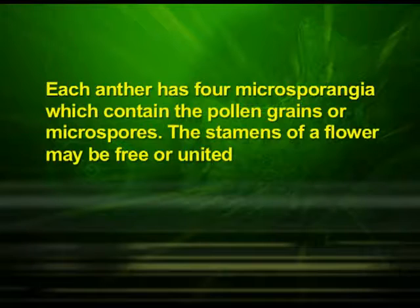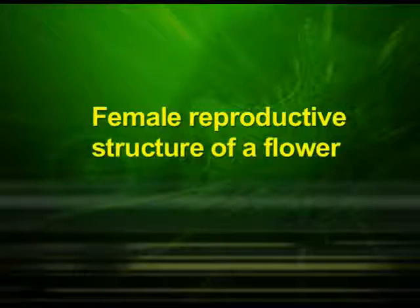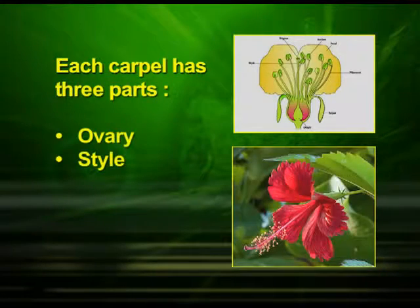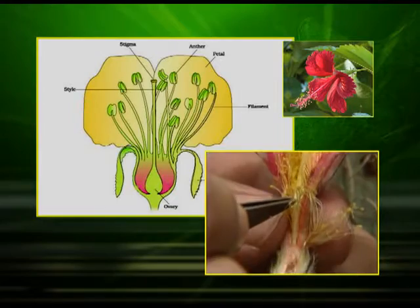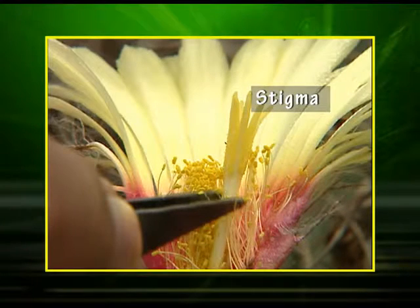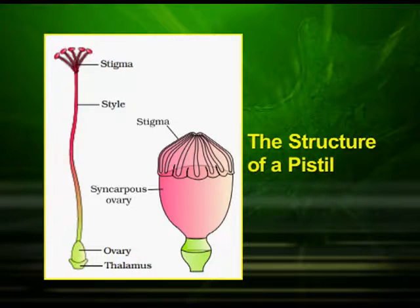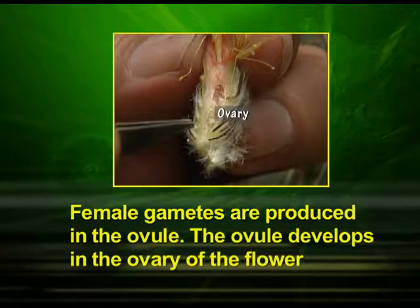Each anther has 4 microsporangia which contain the pollen grains or microspores. The stamens of a flower may be free or united. The gynoecium or the pistil is the innermost whorl of a flower. It is the female reproductive part of the flower. The gynoecium is composed of carpels. Each carpel has 3 parts: ovary, style and stigma. The basal swollen part of the carpel is called the ovary. The long or short middle portion is the style and the terminal receptive structure is the stigma. The stigma serves as a landing platform for the pollen grains. The ovary bears ovules inside it. Female gametes are produced in the ovule. The ovule develops in the ovary of the flower.